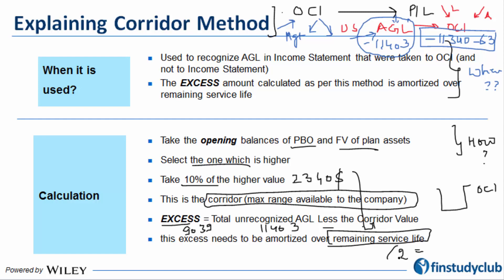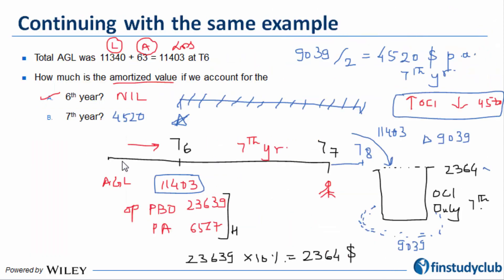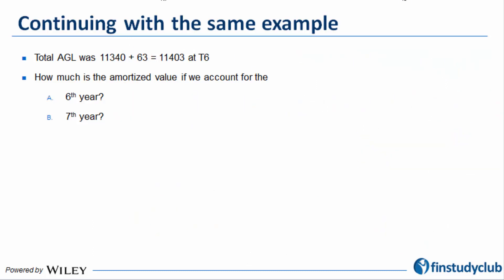Now you must be wondering, what if the actuarial would have made a change in the beginning of the sixth year? Then what would have happened? In that case, if the actuarial would have made a change at the beginning of the year...